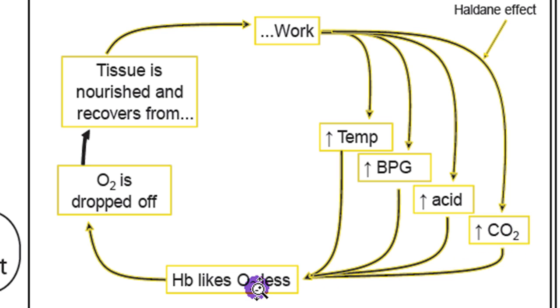That CO2 is going to compete with hemoglobin. It's literally going to kick off oxygen. It's going to kick the oxygen off the hemoglobin. O2 is dropped off, and the tissue is nourished. So if the tissue is metabolizing, it will make more CO2. The higher concentration of CO2 will compete with hemoglobin for oxygen, meaning it's going to kick that oxygen off the hemoglobin.